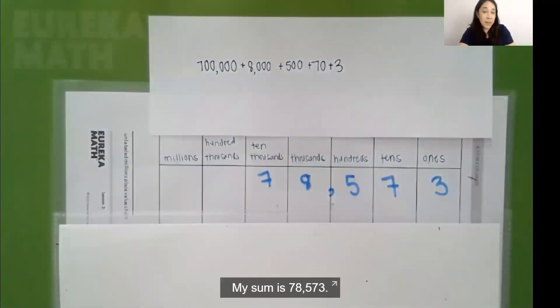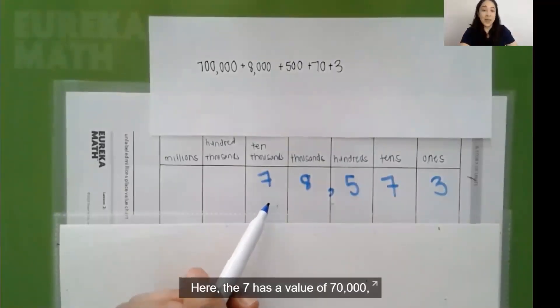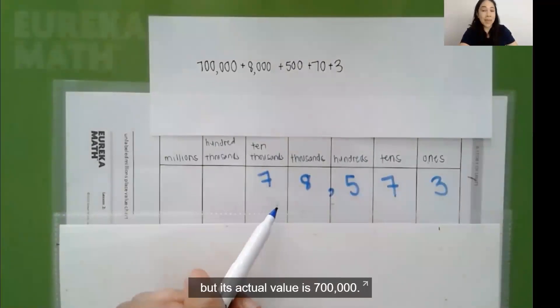My sum is 78,573. Is this correct? Ah, my 7 is in the wrong place. Here, the 7 has a value of 70,000, but its actual value is 700,000.